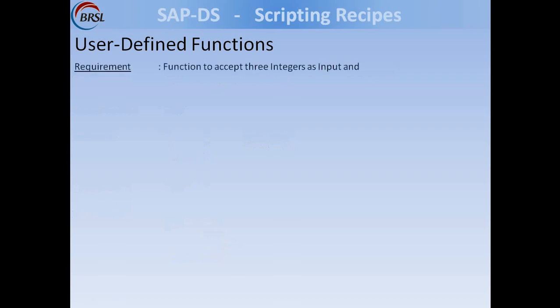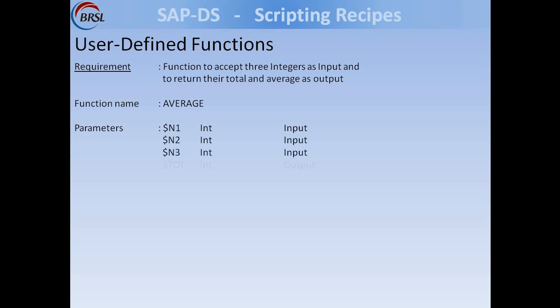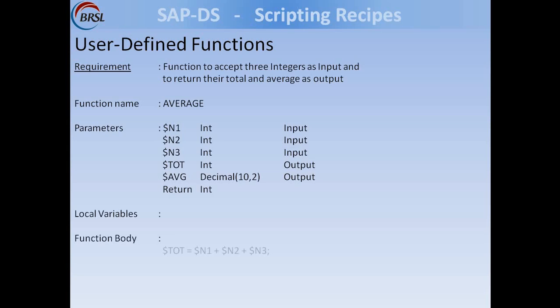Another example: a function to accept three integer numbers as input and return their total and average as output. The function is named average. It has three integer input parameters n1, n2, n3, and two output parameters: total and average, where average is of type decimal since the result may be fractional. A return parameter is mandatory. No local variables are needed. In the function body: total = n1 + n2 + n3; average = total / 3. Finally, a return statement returns the value. This is how simple programming features like control statements, functions, and expressions can be used inside SAP Data Services scripting.